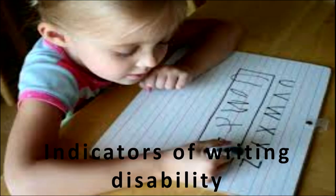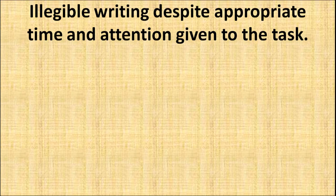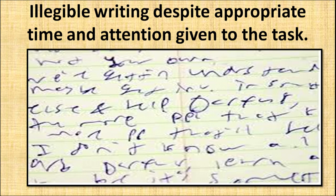Now let us study the indicators of writing disability. In this slide you can see a child writing the letters U through Z. Notice the formation of U — the child takes it below the line, and the next letter V is very small compared to the others. The first indicator is illegible writing despite appropriate time and attention given to the task. Appropriate time was given, yet the writing shows very few legible words — it doesn't make sense as a piece of writing.